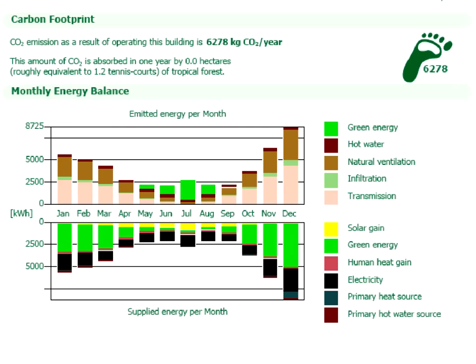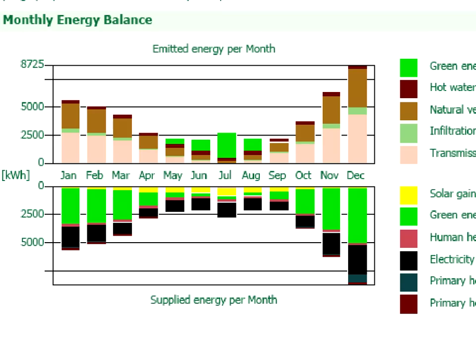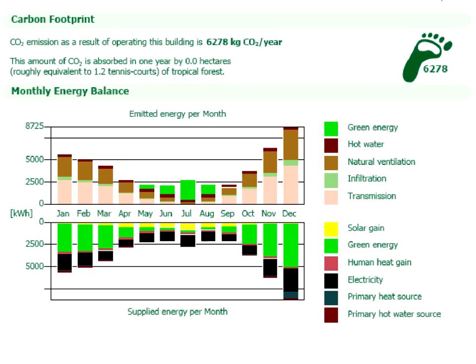Let's have a closer look at the monthly energy balance graphs. Notice that there are hardly any blue areas at the lower part of the graph. This means that there is virtually no need to use any supplied heat source in this building. Heating is provided by the solar collectors and the heat pump, while the collectors also produce the energy needed for hot water generation, and the heat pump is switched to cooling mode during the warm summer months. Both the heat pumps and solar collectors can be used to produce energy for multiple purposes simultaneously.